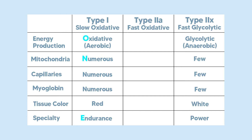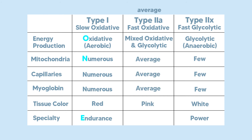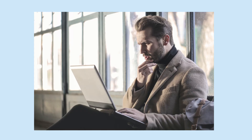The easiest way to remember Type 2a fibers is to think of the A as standing for average. These fibers are basically the average of the other two. Since it's a Type 2, it is considered a fast twitch fiber, but it can also do glycolytic and oxidative energy production. It has an average amount of mitochondria, capillaries, and myoglobin, and an average amount of fatigue resistance and endurance. It's basically the jack of all trades but the master of none.